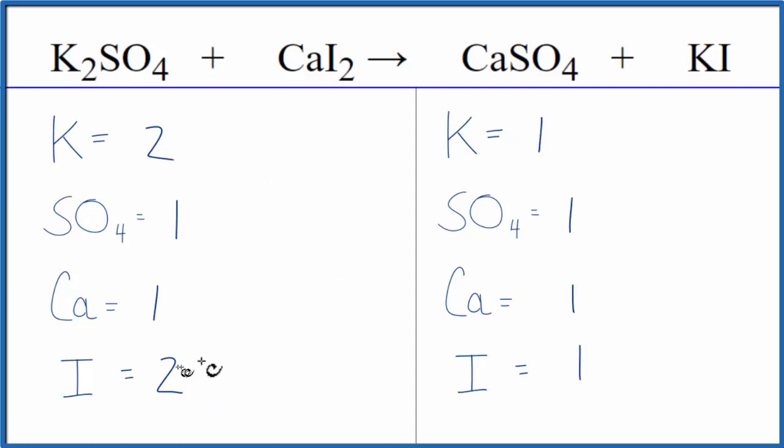Two iodines, and then one on the product. All we need to do is put a two as our coefficient in front of the potassium iodide. One times two, that'll give us two potassium atoms. One times two, that will give us two iodine atoms.